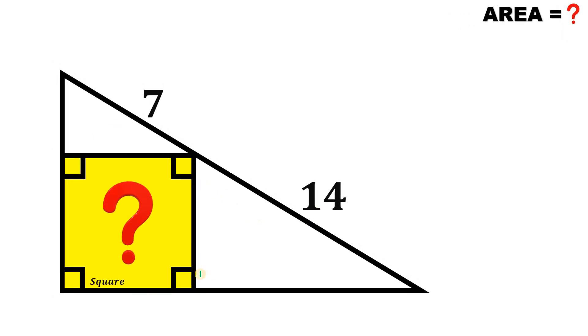Alright, so given this right triangle and inside of this right triangle we have a square, then the goal is to find the area of this yellow square. Now to answer this kind of question, what we're going to do is to notice some similar triangles.